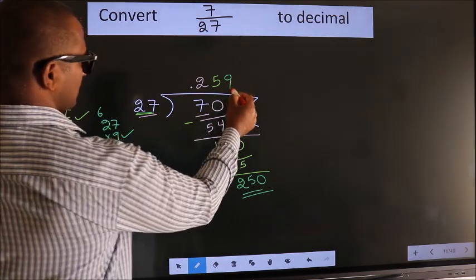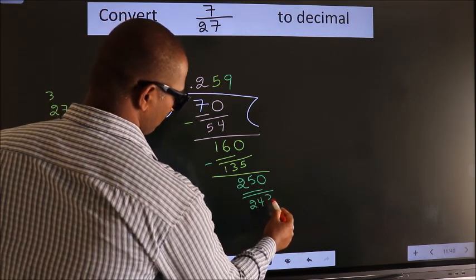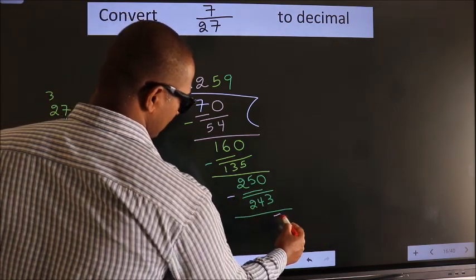So 9 times 243. Now we subtract and get 7.